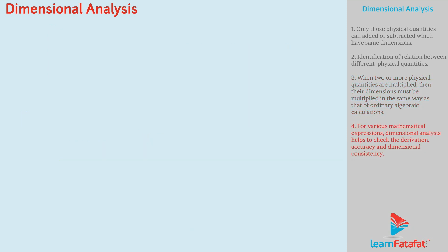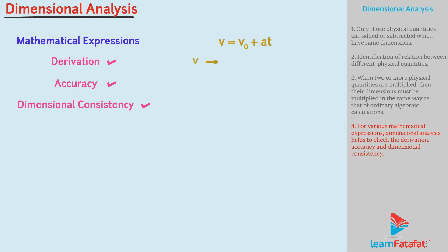For various mathematical expressions, dimensional analysis helps to check the derivation, accuracy and dimensional consistency. For example, let us check the correctness of the equation V equals to V0 plus A into T, where V is final velocity, V0 is initial velocity, A is acceleration and T is time.